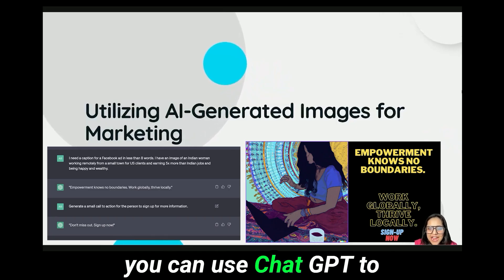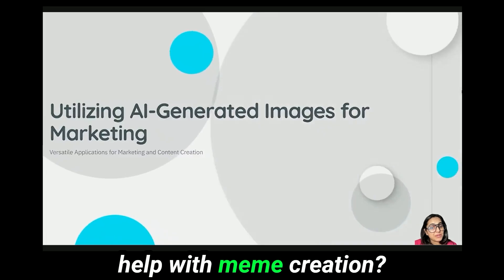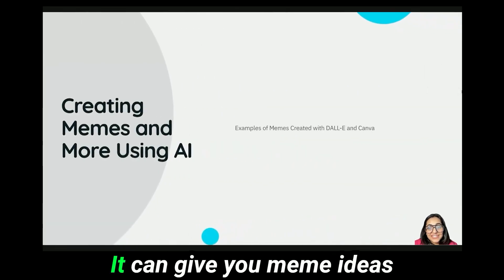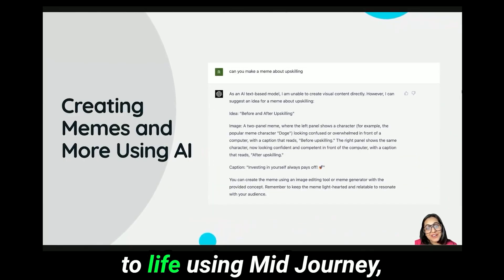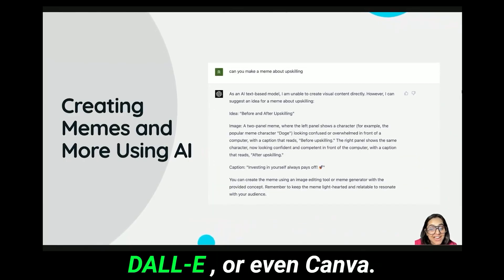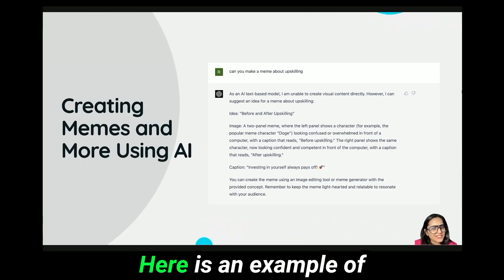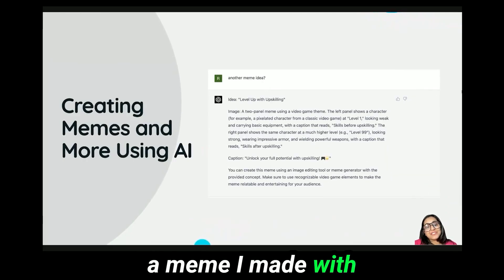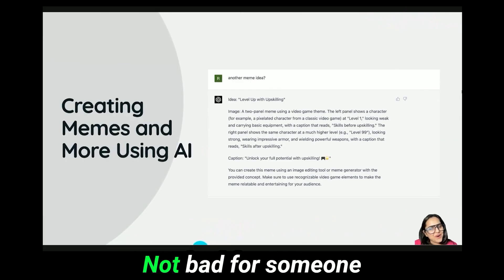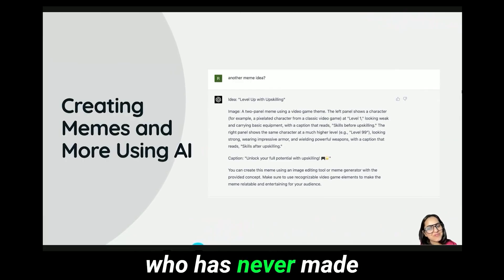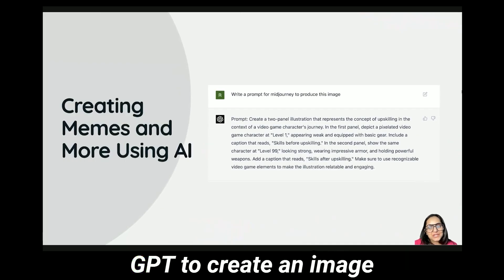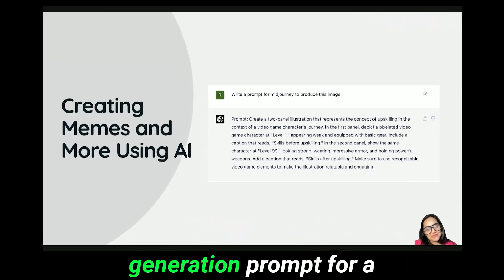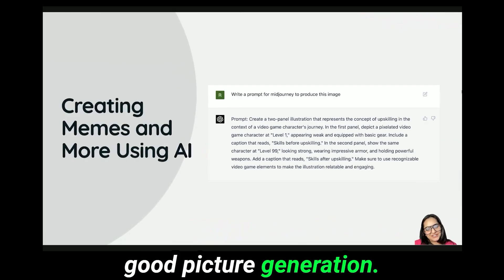Did you know you can use ChatGPT to help with meme creation? It can give you meme ideas and you can bring those ideas to life using Midjourney, DALL-E, or even Canva. Here is an example of a meme I made with DALL-E and Canva — not bad for someone who has never made a meme before. You can even ask ChatGPT to create an image generation prompt for good picture generation.